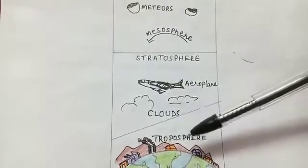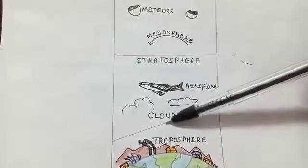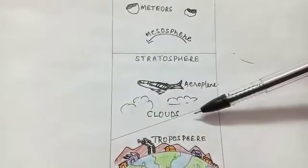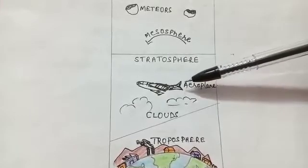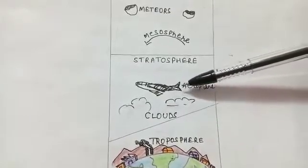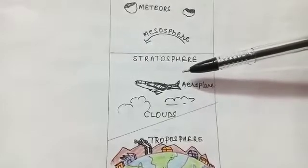Now the temperature in the lower part of stratosphere remains constant and as we go higher and higher there is a slow or gradual increase in the temperature.